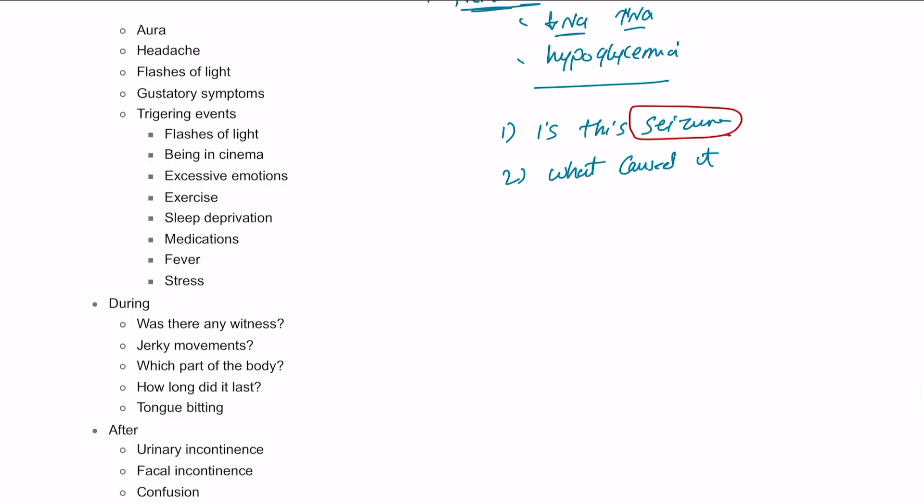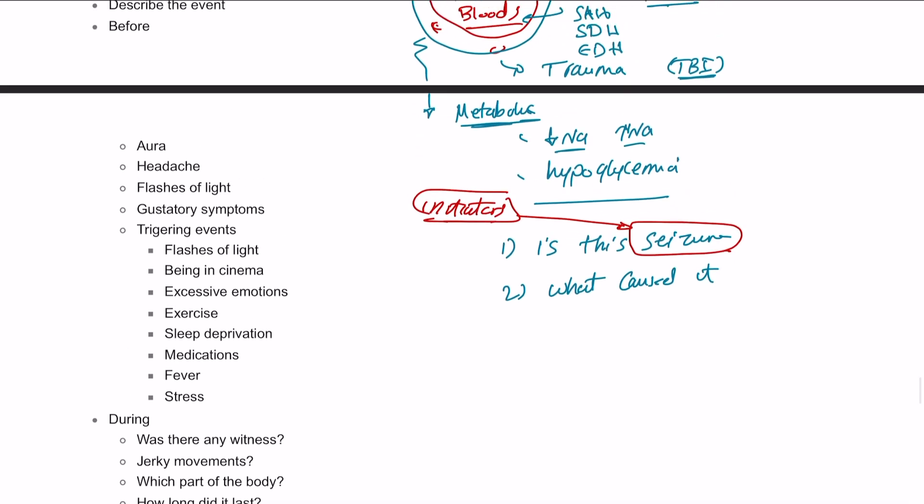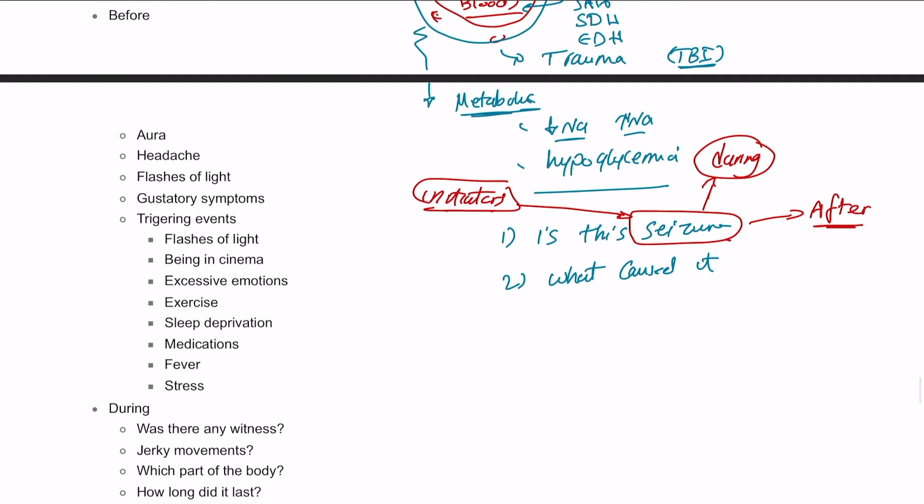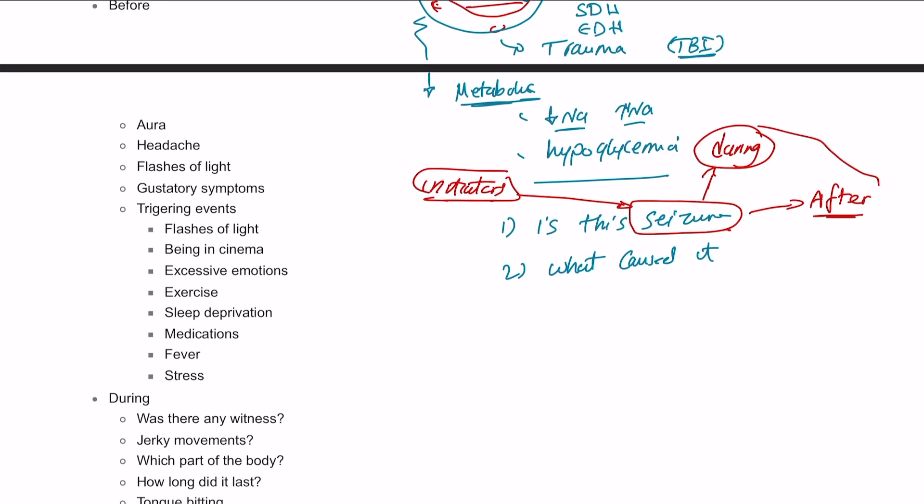So, a seizure to happen, it will need to have a few initiators, and that could be flashing lights, or exercise, and so on. And then, there are some things that happen during the seizure, which are the jerky movements, the loss of consciousness, the duration of the seizure. All of these are important questions that we need to ask about. And after the seizure, there are a few things that happen as well, such as post-ictal confusion, post-ictal urination, and post-ictal defecation as well. So, when we're taking history, we need to focus first, is this seizure? And then second, what caused that?